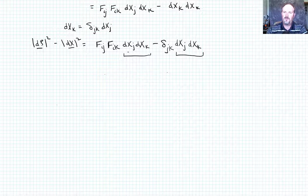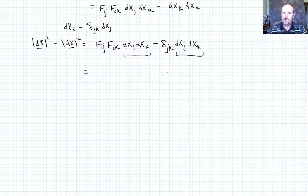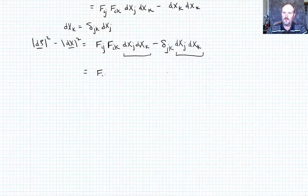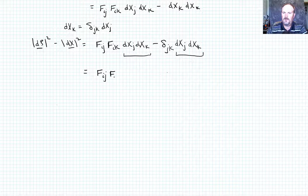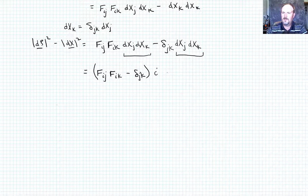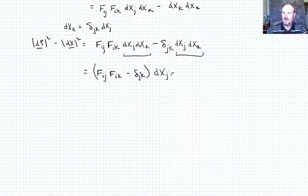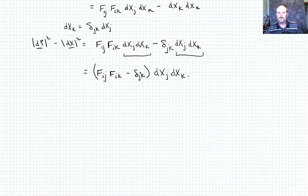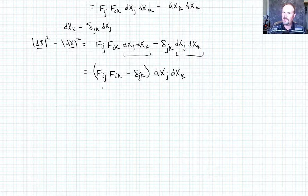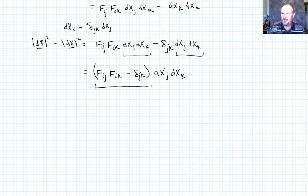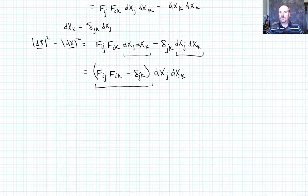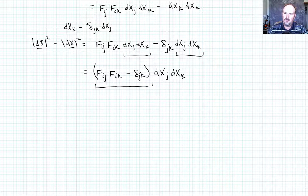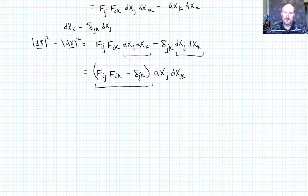Okay, so now we're in a position to factor out these quantities here in brackets. And so we can write F_ij F_ik minus δ_jk times DX_j DX_k. Okay, so we basically have this quantity here multiplied by the differential vector in reference space.